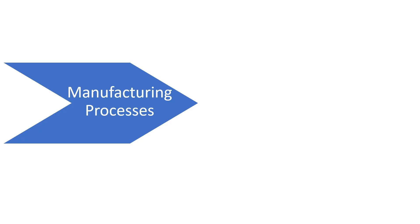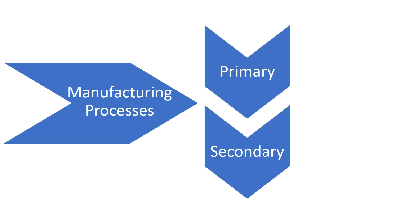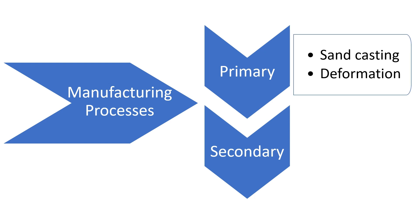In conclusion, manufacturing processes can be classified into primary and secondary processes. Primary processes are used to shape the raw material. Examples of this are sand casting and deformation processes.